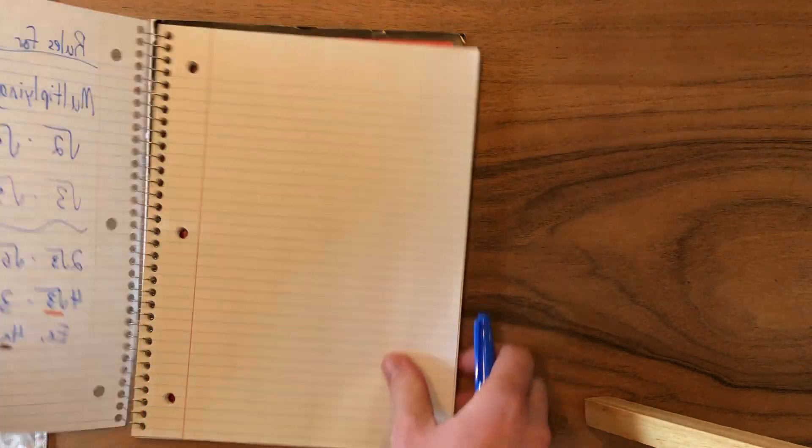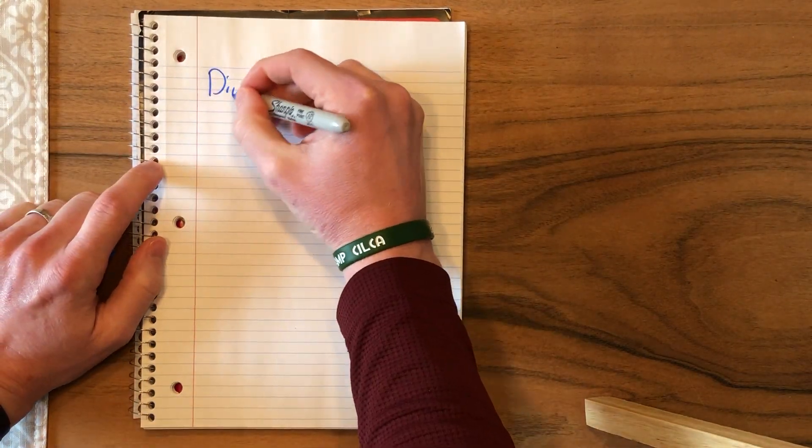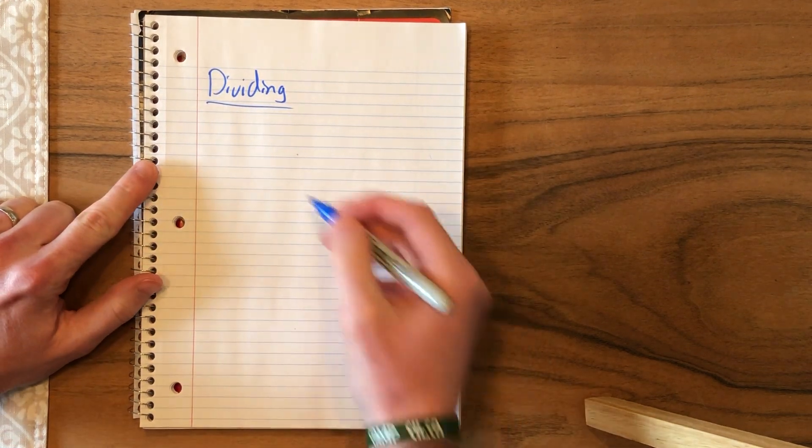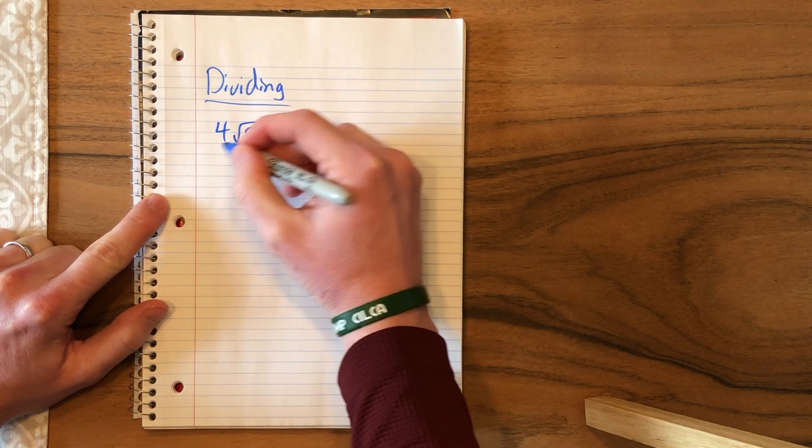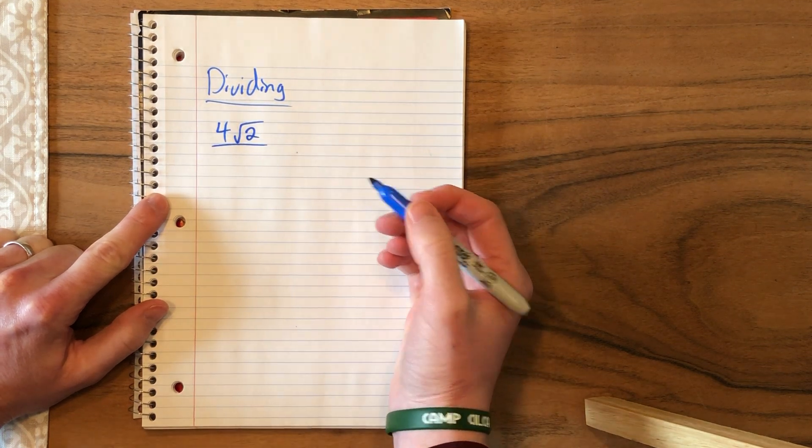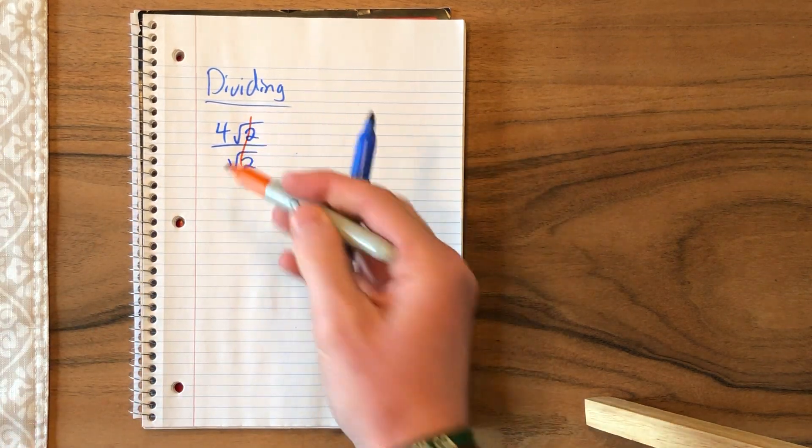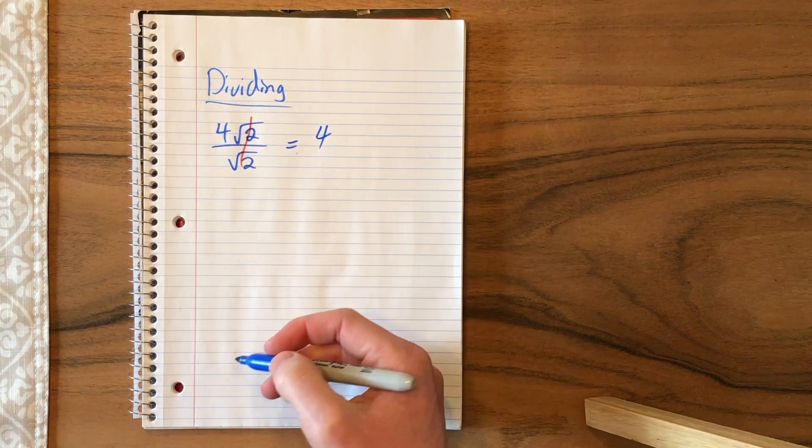Now to talk about dividing. If we're dividing radicals, if your radical is in the denominator and the numerator, so if we have 4 root 2 and we divide by root 2, easy enough, they cancel out, and we're just left with 4.